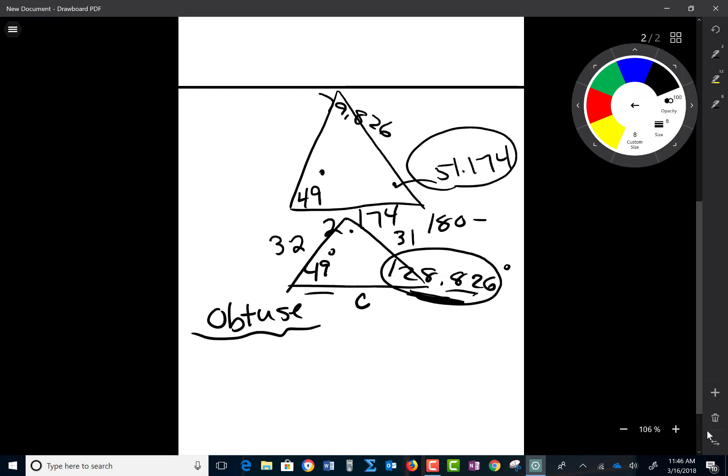So the math that I would need to do now would be sine of 2.174 degrees over C, and then I could use either one of the others to find that missing side. So that's the math that we're looking at to get that actual missing side.